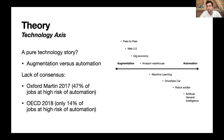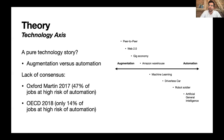An initial study published in 2013 — the Oxford Martin study — said 47% of jobs today are at a high risk of automation, given current technologies, with no time framework provided. Further studies by the OECD, MIT, and others have revised this, saying actually only 14% of jobs today are at a high risk of automation, with the rest more likely to be augmented rather than automated.